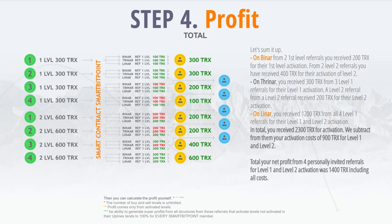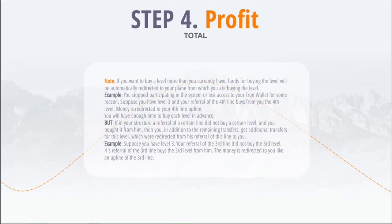To sum up: in binary, from 2 first-level referrals you received 200 TRX for their level 1 activation, and from 2 second-level referrals, 400 TRX for level 2. In trinary, from 3 first-level referrals, 300 TRX for level 1, and from 1 second-level referral, 200 TRX for level 2. In Lina, from all 4 first-level referrals, 1200 TRX for their level 1 and 2 activations. Total income: 2300 TRX. Subtracting your 900 TRX costs, your net profit from 4 personally invited referrals was 1400 TRX including all costs.